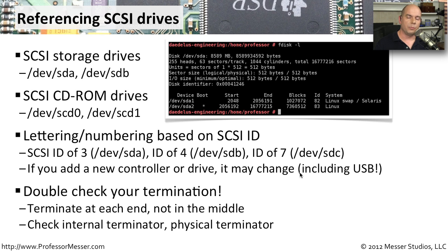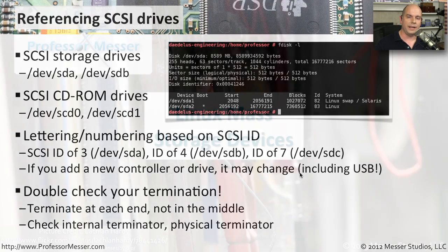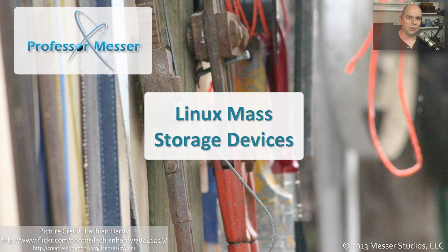If you're not able to see drives connected to your SCSI bus, or something odd is going on with a new installation, check your termination. Make sure you are terminating physically at the end of the chain — not somewhere in the middle — or look for a built-in terminator in the SCSI device itself, so that you're able to see all devices connected to that SCSI controller.